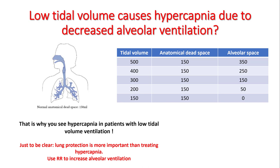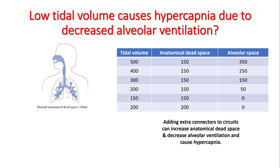If you have issues with hypercapnia, you can use different modalities on the ventilator — please see my lecture on optimizing respiratory rate on mechanical ventilation. If your anatomical dead space increases to, say, 200 cc, and your tidal volume is also 200 cc, alveolar ventilation will still be zero. Adding any extra connectors to the circuit can increase anatomical dead space, decrease alveolar ventilation, and cause hypercapnia.